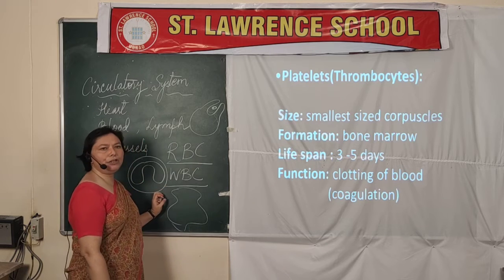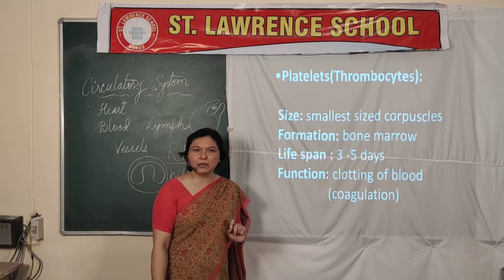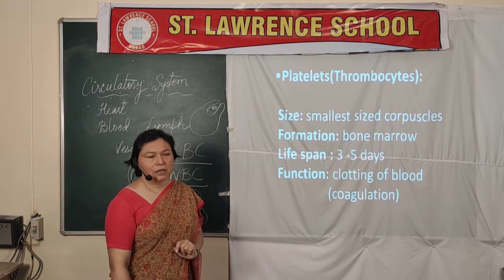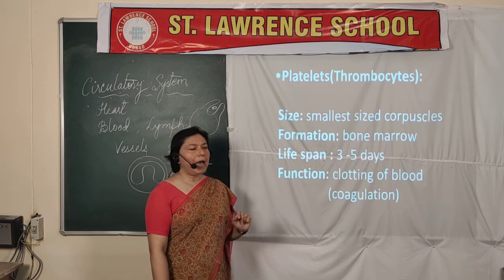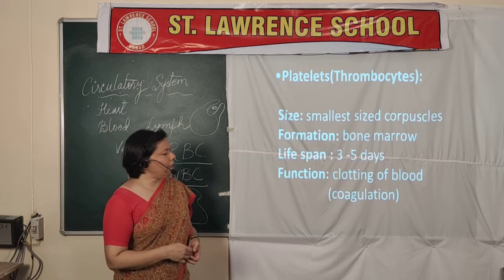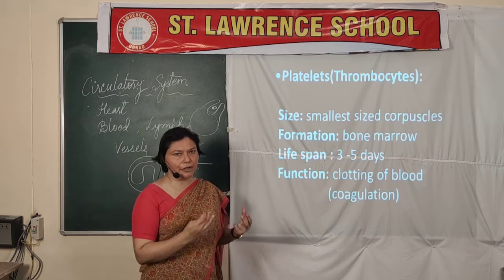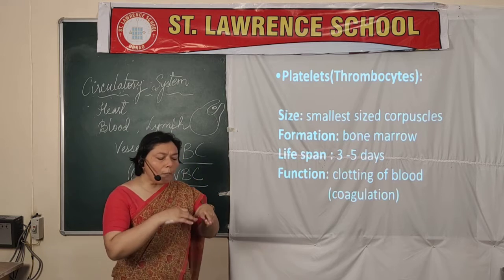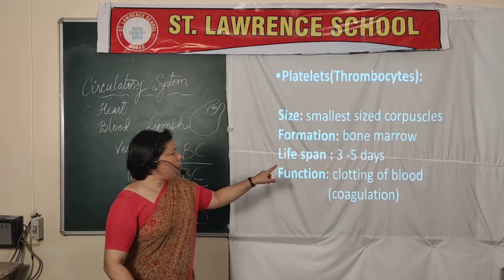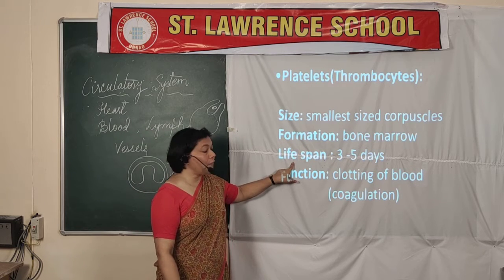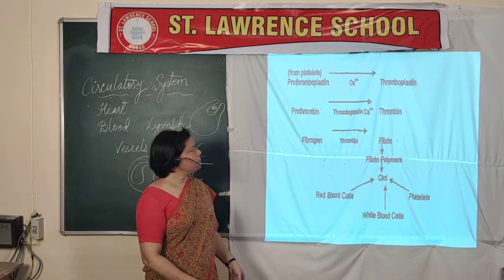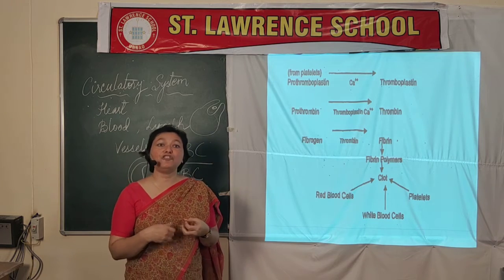The third category of corpuscles found in the blood — after RBCs and WBCs — is blood platelets, also known as thrombocytes. Their main function is to help in clotting of the blood. They are the smallest sized corpuscles and are normally found at the periphery of the blood vessel. They are formed in the red bone marrow of the long bones and their lifespan is 3 to 5 days.